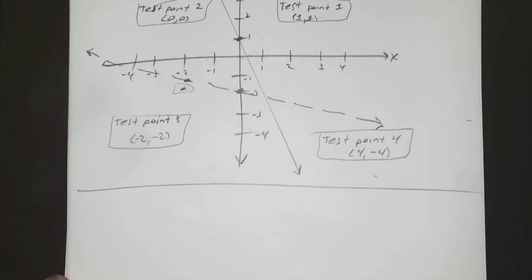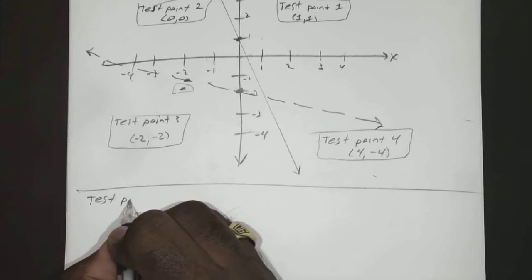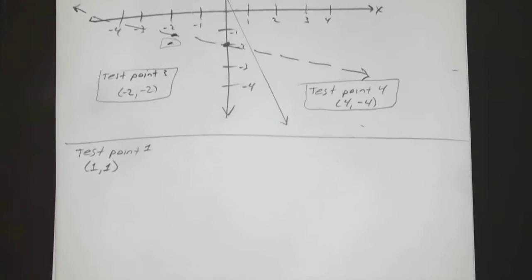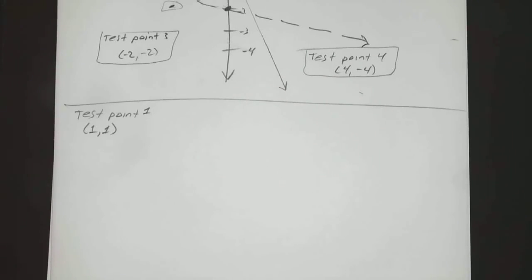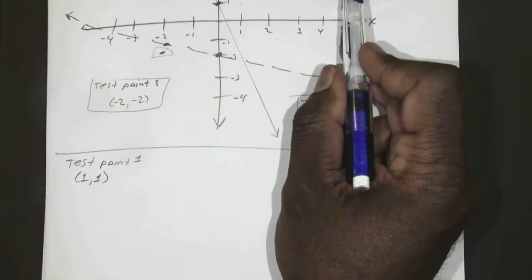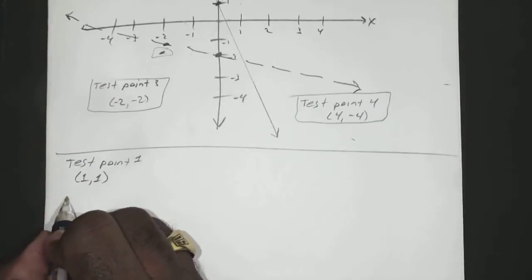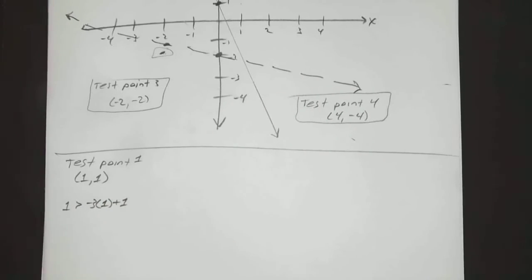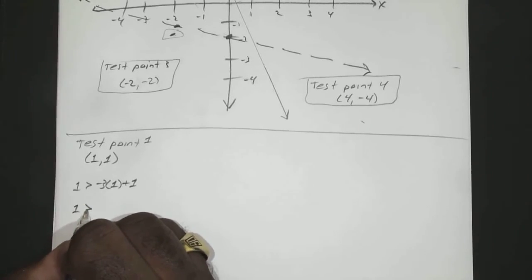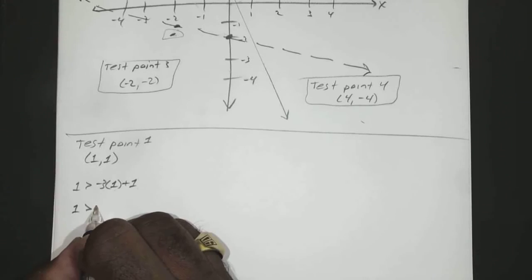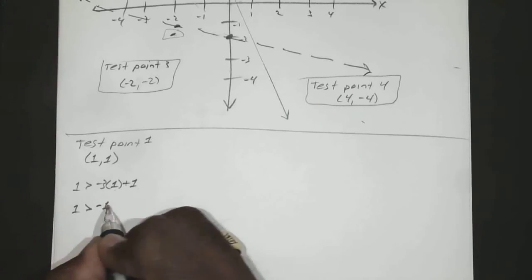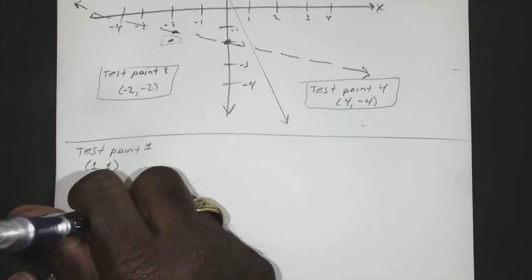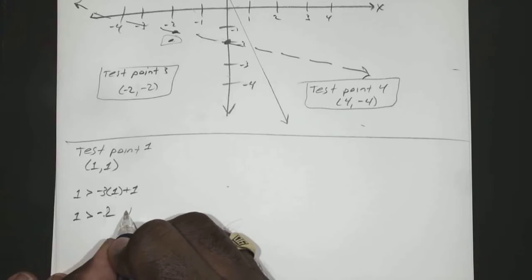All right, so now test point 1, we have 1, 1. Try to hurry up and not hold you over too long. So if we have y is equal to 1 and x is equal to 1, that gives us 1 is greater than negative 3 times 1 plus 1. So 1 is greater than negative 2 plus 1. So you have negative 3 plus 1, which is negative 2. So 1 is greater than negative 2, which is true.